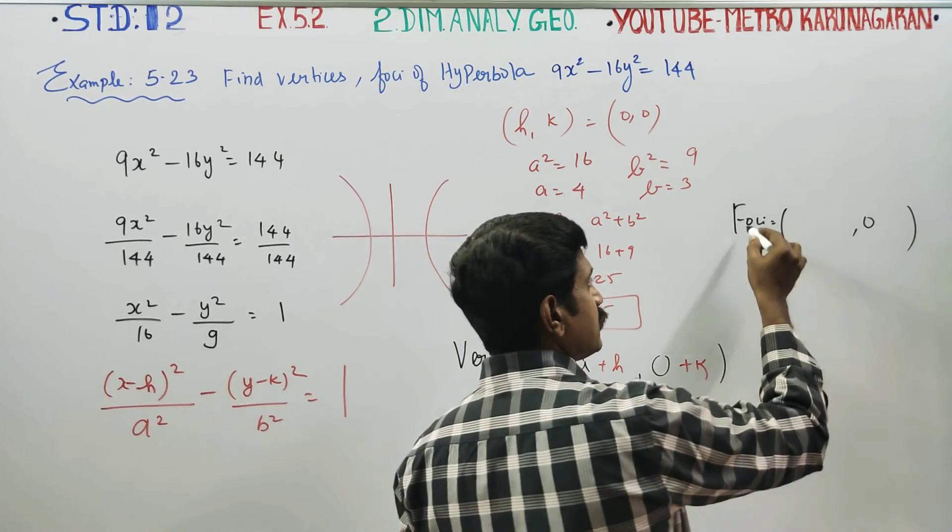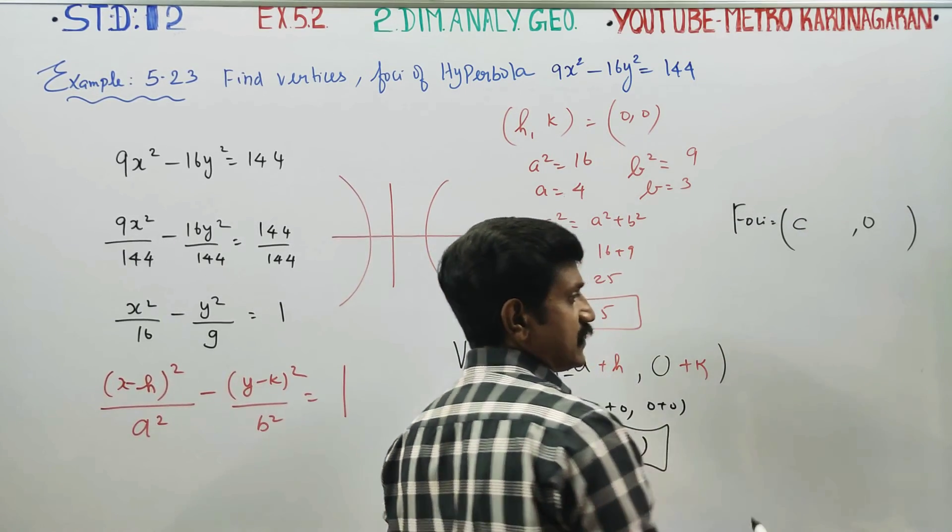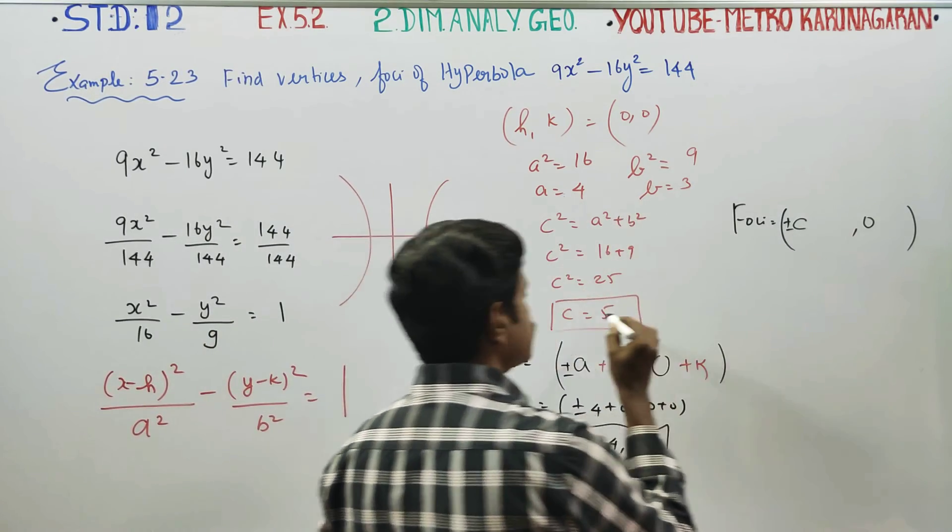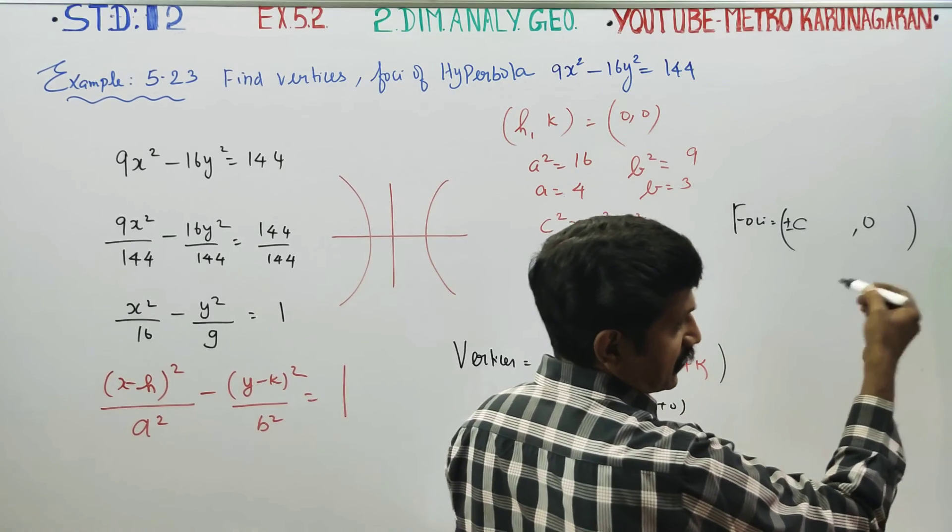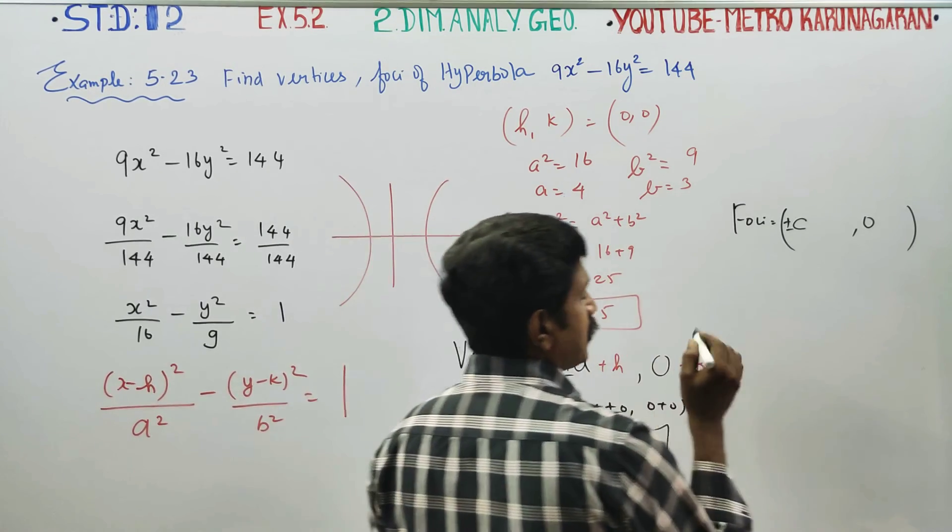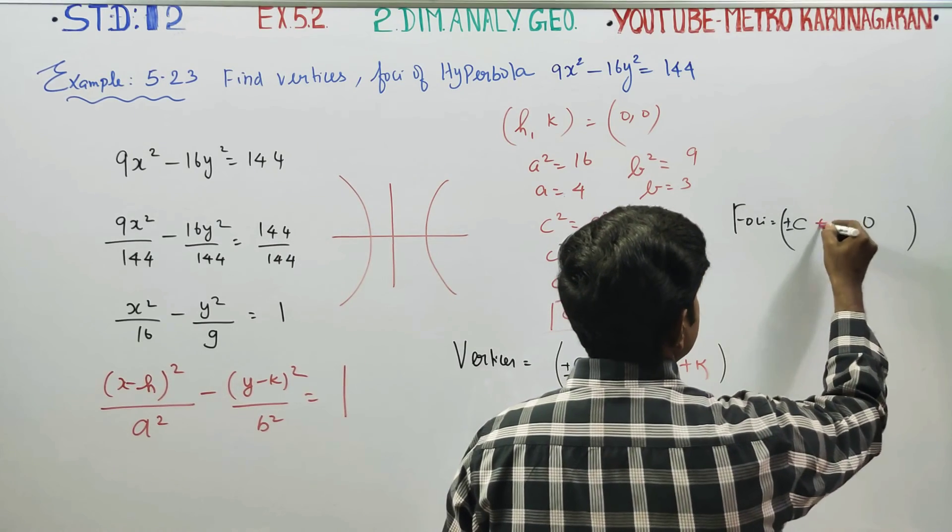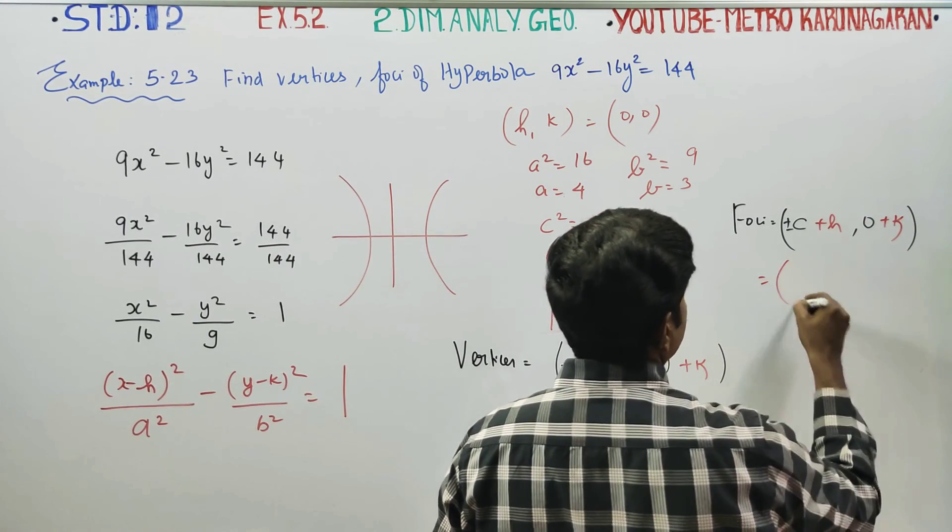Then x has a value. For foci we use c, plus or minus c. Always you have to complete with h and k. Therefore, you have to put plus h and plus k.